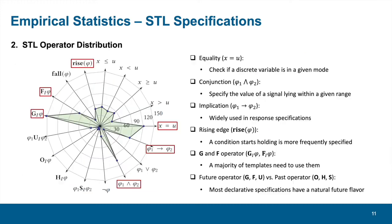Next, we studied the frequency distribution of STL operators. The results show huge discrepancies. For example, for arithmetic operators, we find equality is used more often. This is because equality can also be used to check if a discrete variable is in a given mode. We also find that future operators are used much more often than past operators. This may be because most specifications have a natural future flavor.